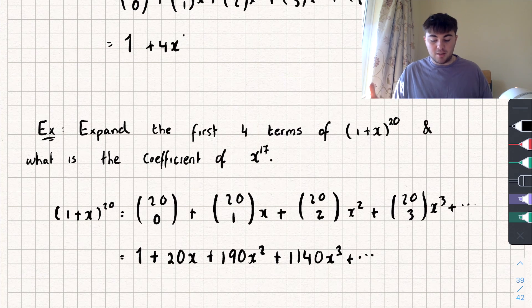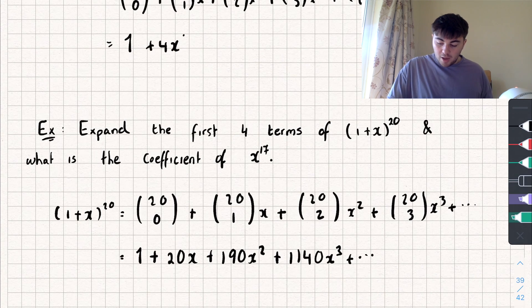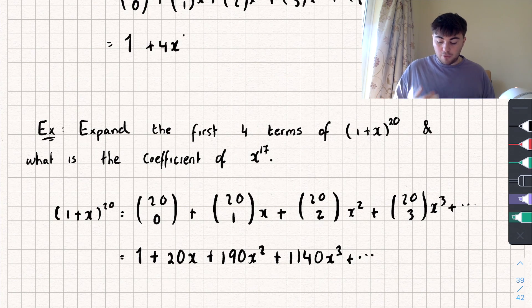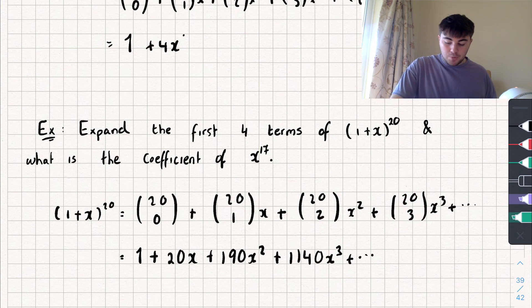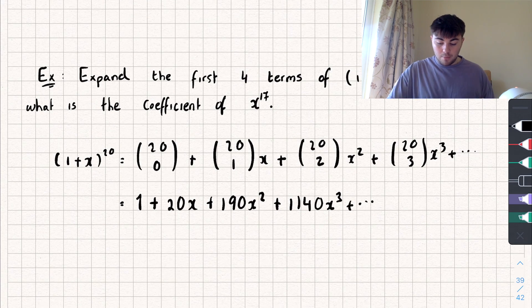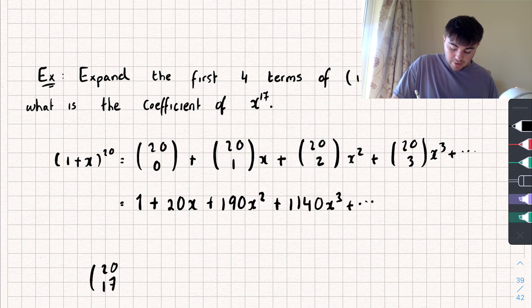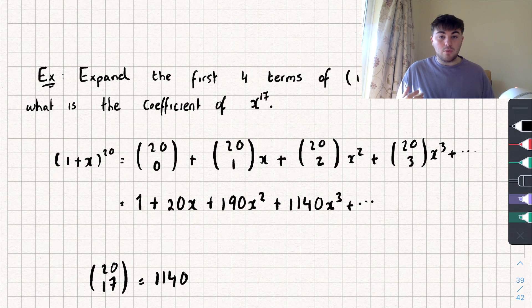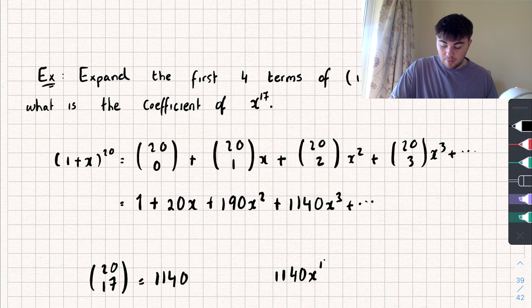That makes it so much easier! For the second part, where we need to find the coefficient of x to the power of 17: the second number in our n choose r refers to the power of x we get out. So with 20 choose 3, the 3 refers to x cubed. If I wanted the x^17 term, I do 20 choose 17, and that gives me 1140. So the coefficient of x to the power of 17 is 1140.